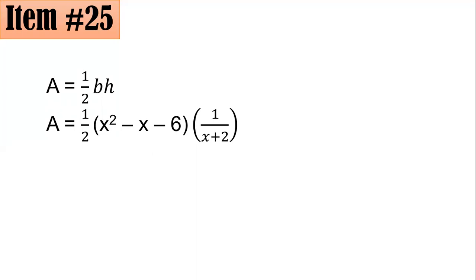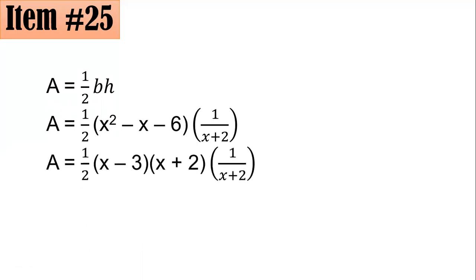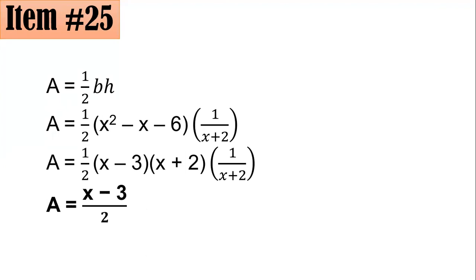We notice that x squared minus x minus 6 is factorable into (x minus 3)(x plus 2). So x plus 2 in the numerator and x plus 2 in the denominator cancel, leaving one-half times (x minus 3), or simply (x minus 3) over 2 as the area. Letter A.